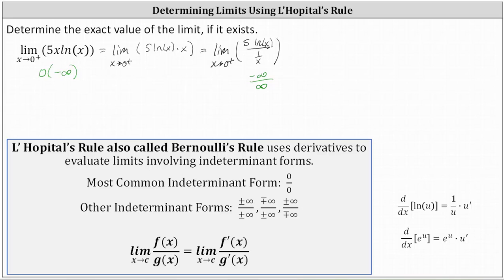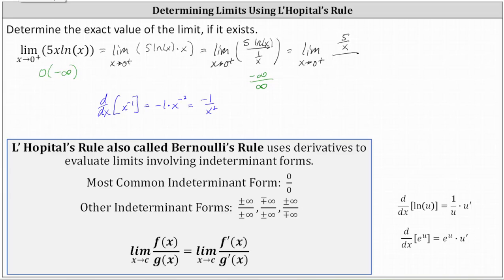Now we differentiate the numerator and denominator. Applying L'Hôpital's rule, we have the limit as x approaches zero from the right of the derivative of 5 natural log x, which equals 5 times 1 over x, or 5 divided by x. Then divided by the derivative of 1 divided by x: we write 1 over x as x to the negative 1 and apply the power rule, giving us negative 1 times x to the negative 2, or negative 1 divided by x squared.